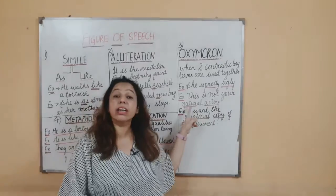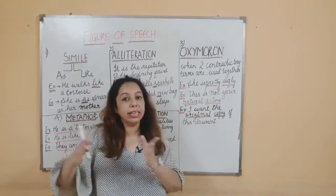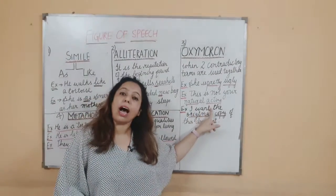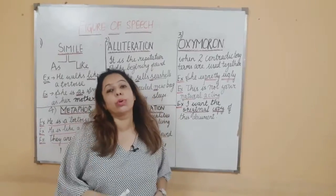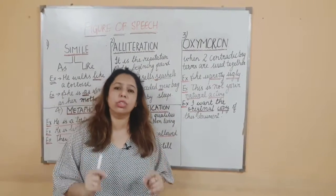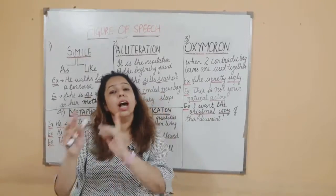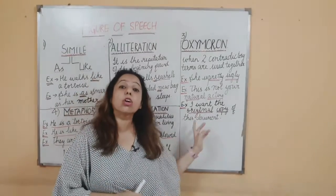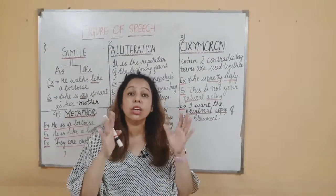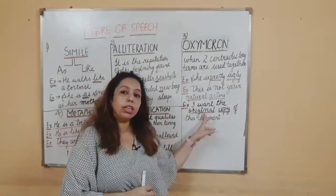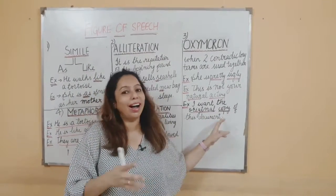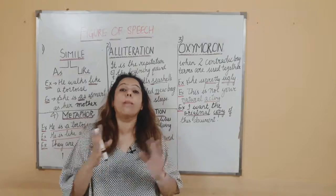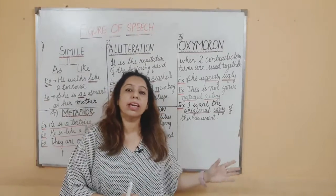Next example: 'This is not your natural acting.' Natural means by nature, acting means performing — so 'natural' and 'acting' are two contradictory opposite words in one sentence. Oxymoron is very easy to judge — just find two opposite words in the sentence. Another example: 'I want the original copy of this document.' Original and copy are opposite contradictory words. So in oxymoron, there are two opposite words used in one sentence — we call it oxymoron.